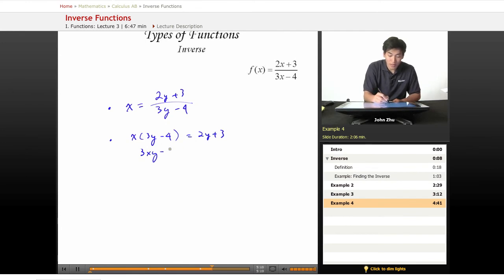3xy minus 4x, multiplying x into the expression, equals 2y plus 3. Now we have to isolate the y terms.